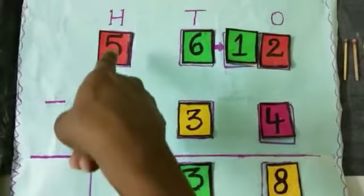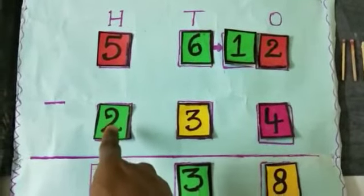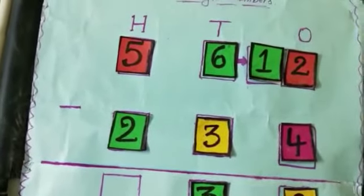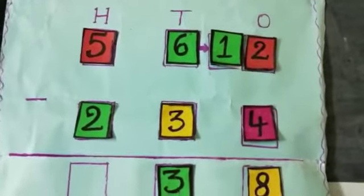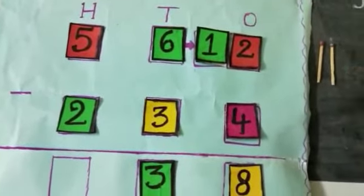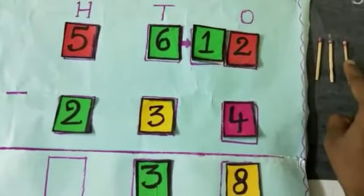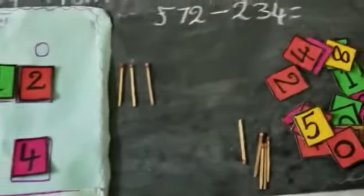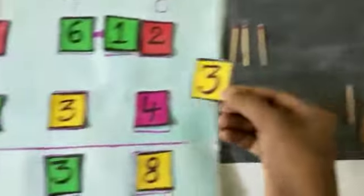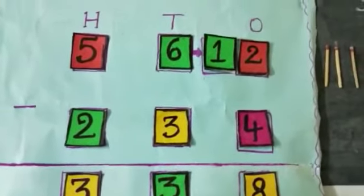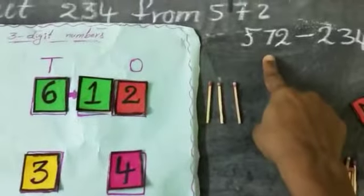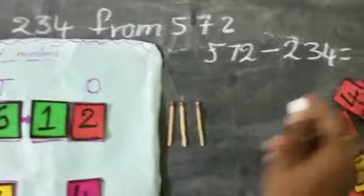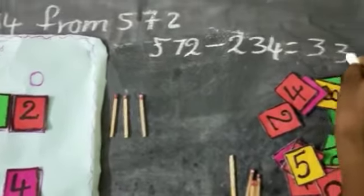And next, subtract the hundreds place values: 5 hundreds minus 2 hundreds. 2 is given below. So count 2 after 5: 3, 4, 5. How many sticks are there? 1, 2, 3. Take the number 3 and write in the hundreds place. So children, 572 minus 234 is equal to 338.